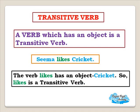I explained in the previous video all about transitive verb. A transitive verb is a verb which has an object. Please remember that. The example is 'Seema likes cricket.' The verb 'likes' has an object 'cricket,' so 'likes' is a transitive verb.